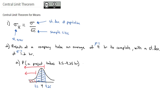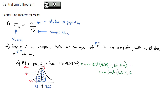On Excel, we type in equals NORM.DIST, and the bigger value — 4.25 — comes first. The average of the whole population is 4, the standard deviation is 1.2, and we always say TRUE. That gives me the area to the left of 4.25. Then we subtract off NORM.DIST of 3.5 — that white area to the left — with mean 4, standard deviation 1.2, and TRUE. When we type that into Excel, we end up with an area of 0.2441.